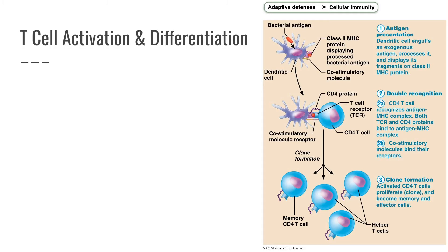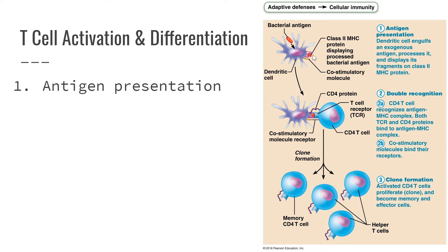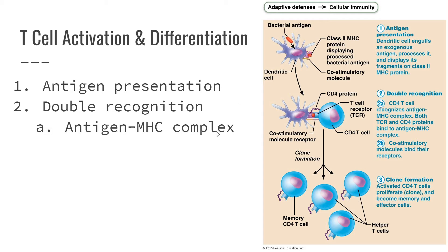Now let's talk about how T cells get activated. It starts with antigen presentation. A dendritic cell is going to engulf a bacteria, digest it, and then display fragments of the bacteria on its MHC protein. After the antigen-presenting cell presents an antigen, the T cell has to go through two rounds of recognizing it. First, it has to recognize the antigen-MHC complex.